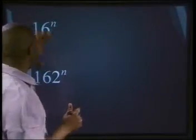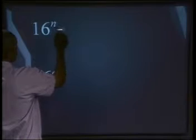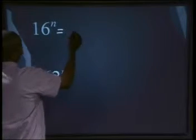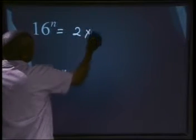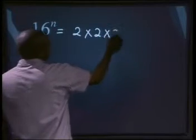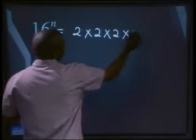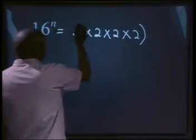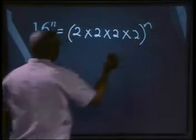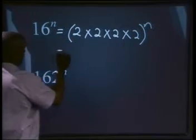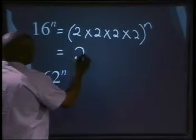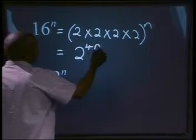Let us revise some prime factorizing. Let's find the prime factors of the following and write the factors as powers. For 16 to the power n: 16 can be written as 2 times 2 times 2 times 2 — that is 2 four times — all to the power of n. And this can be written as 2 to the power of 4n.